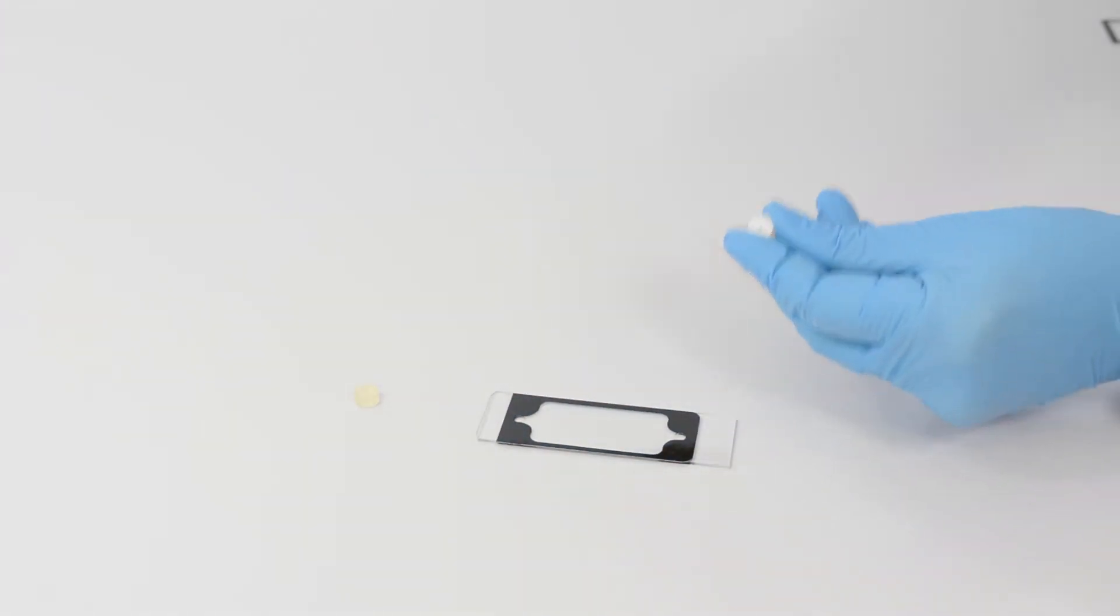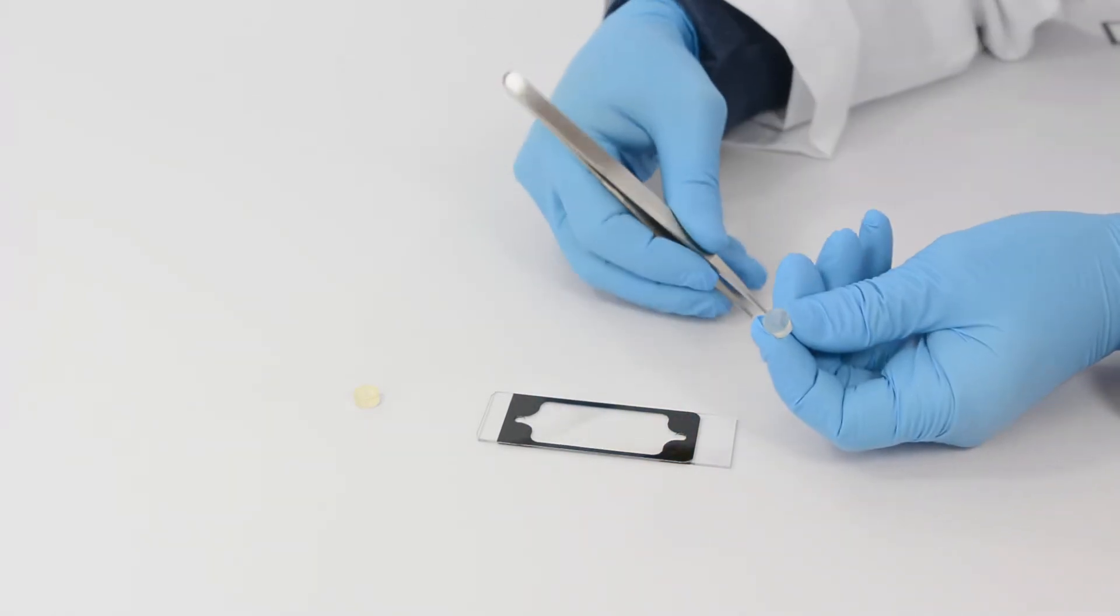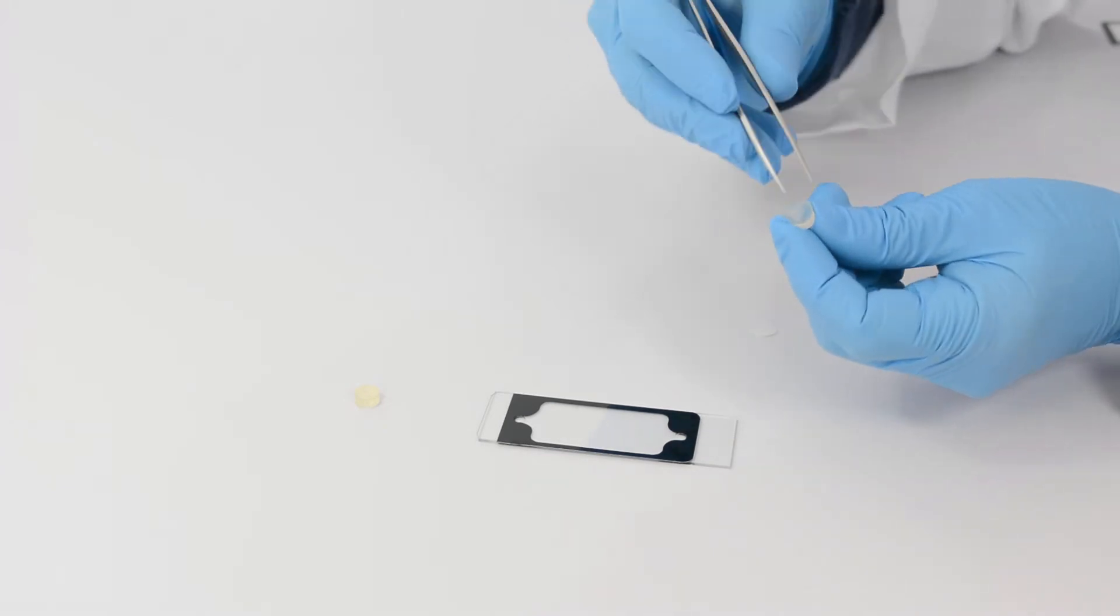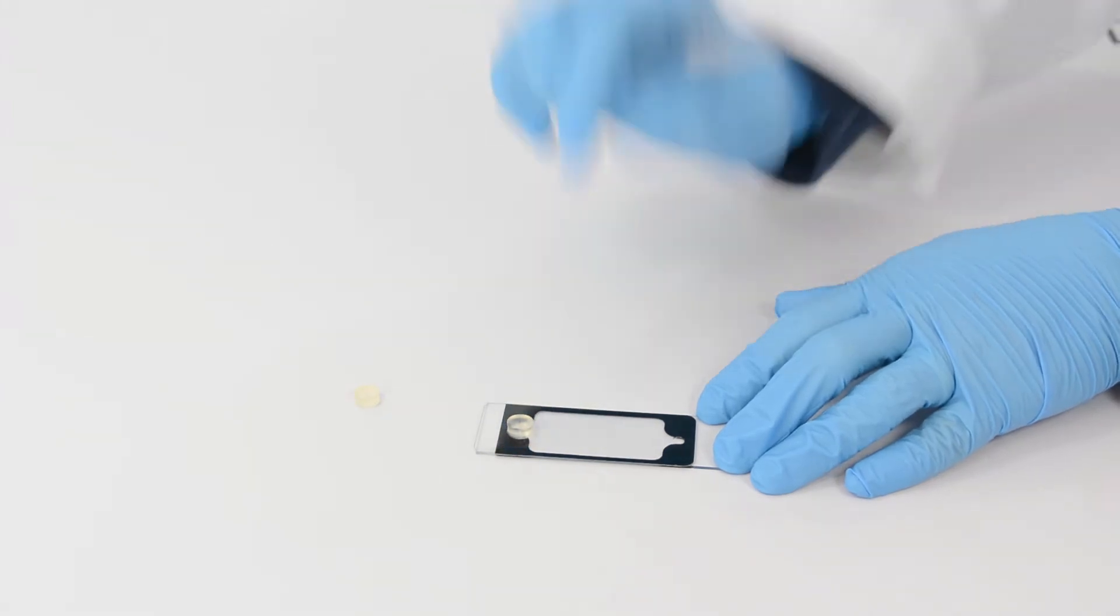Apply thin tubing connectors over each loading port, removing the paper lining first, then applying the tubing connector over the port with the adhesive side facing down.